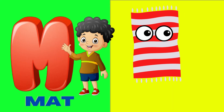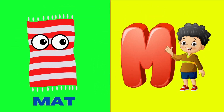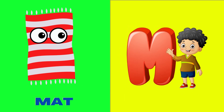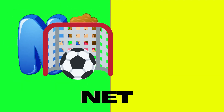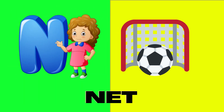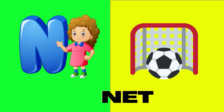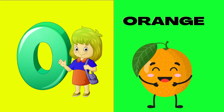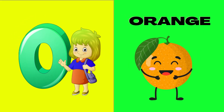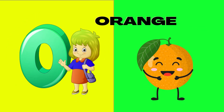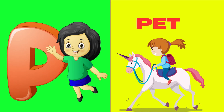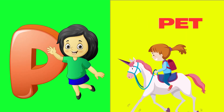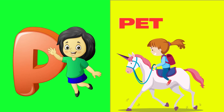M is for mat, m-m-mat. N is for net, n-n-net. O is for orange, o-o-orange. P is for pet, p-p-pet.